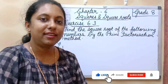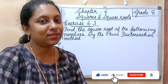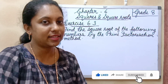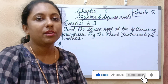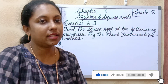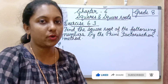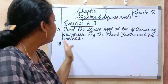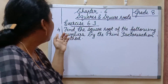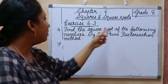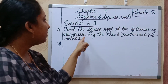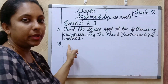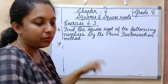Hi everyone, welcome back to Software Smartbook. Hope you all are fine and safe. In the previous class we discussed exercise 6.3. Today we continue to find the square root of the following numbers by the prime factorization method — fourth question.